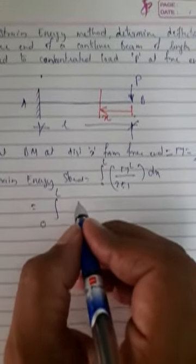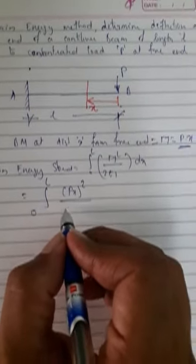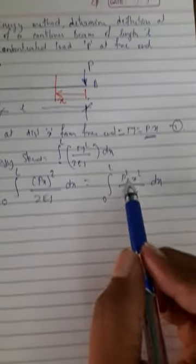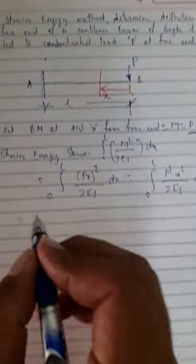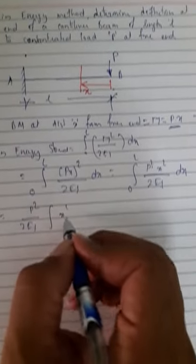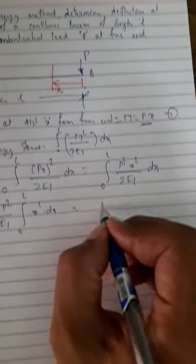M is equal to P into x — let this be equation 1. Now, strain energy stored is equal to the integration from 0 to L of M² by 2EI dx. Substituting the values: integration from 0 to L of (Px)² divided by 2EI dx. Simplifying: P²x² by 2EI dx. Since P², 2, E, and I are constants, take them outside: P² by 2EI, integration of x² dx from 0 to L, which gives P² by 2EI times x³ by 3 from 0 to L.